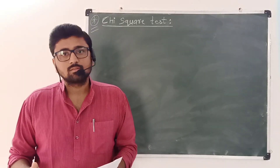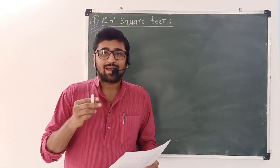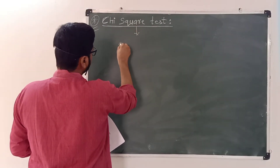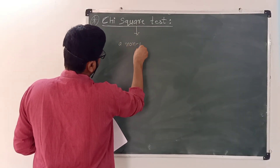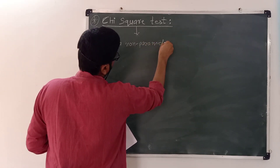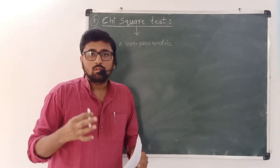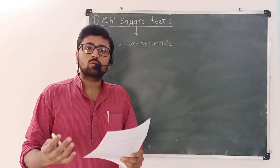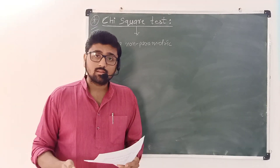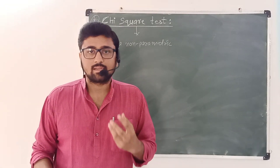The chi-squared test for independence is discussed in this video. The chi-squared test for independence is a non-parametric test because the assumption of normality is not required to perform this test, and that is why this test is also known as a distribution-free test.